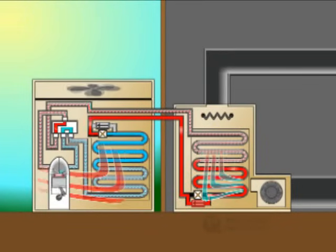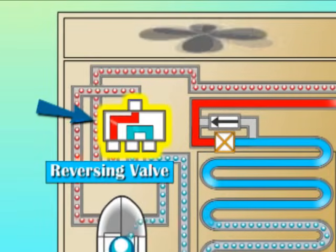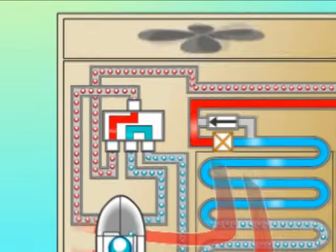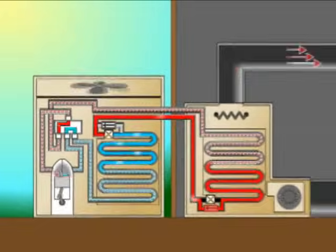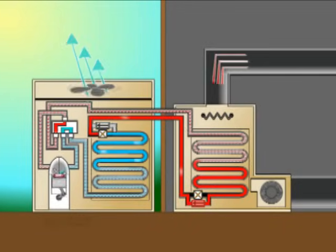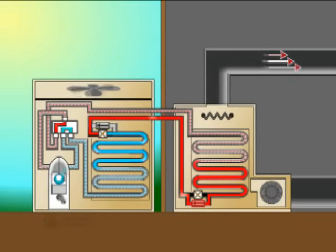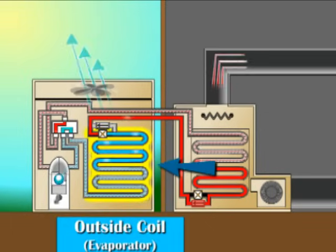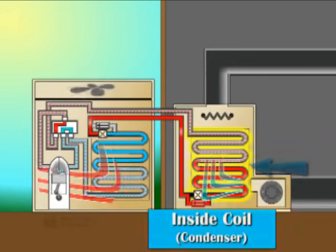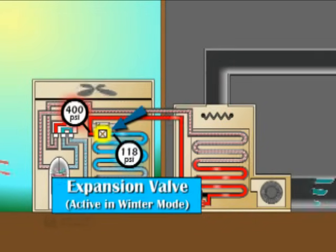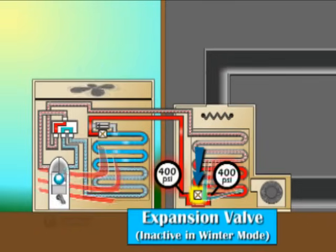During the winter mode, the reversing valve reroutes the refrigerant path, thereby making the outside coil function as the evaporator and the indoor coil as the condenser. The heat is absorbed from the outside air by the evaporator, then brought inside and released by the condenser to heat the home's air. Also notice the outdoor expansion valve is now active as the indoor expansion valve is bypassed.